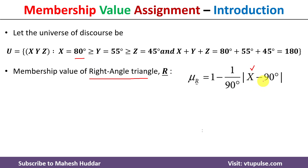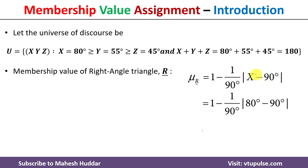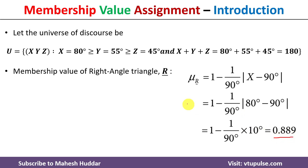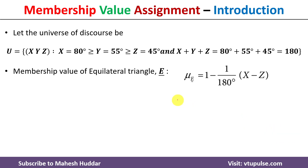So 80 minus 90 equals minus 10, and the absolute value is 10. Therefore, 1 minus (10 divided by 90) equals 0.889. This is the membership value of the right angle triangle.